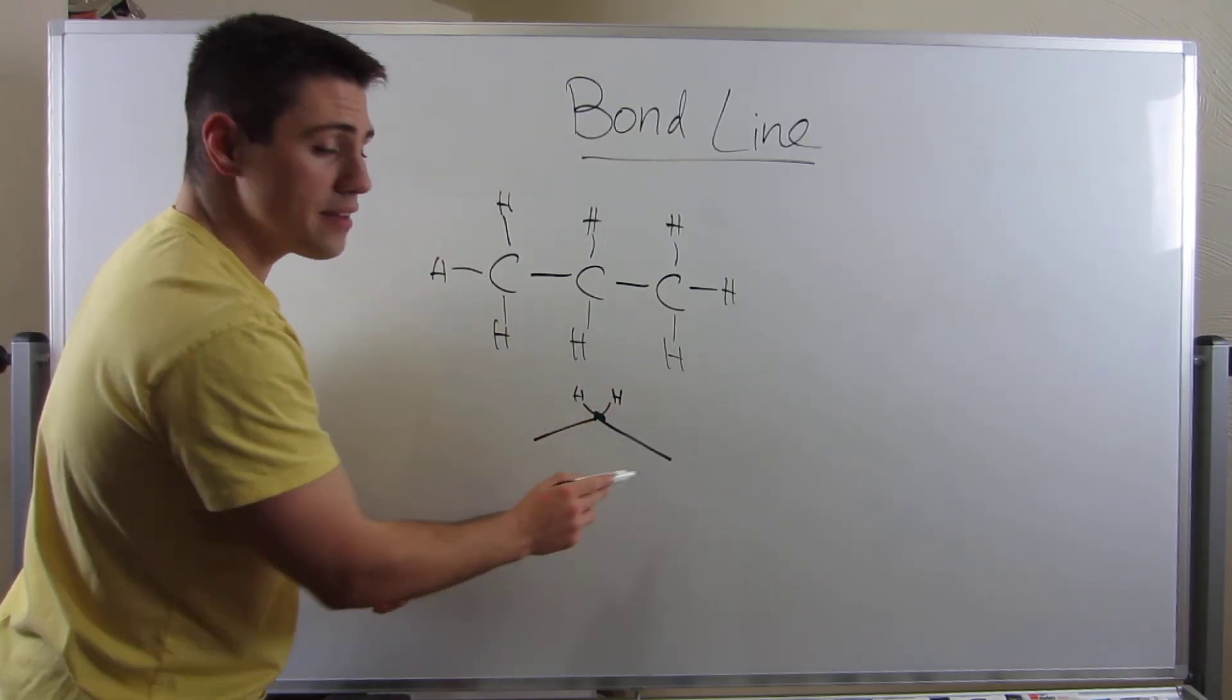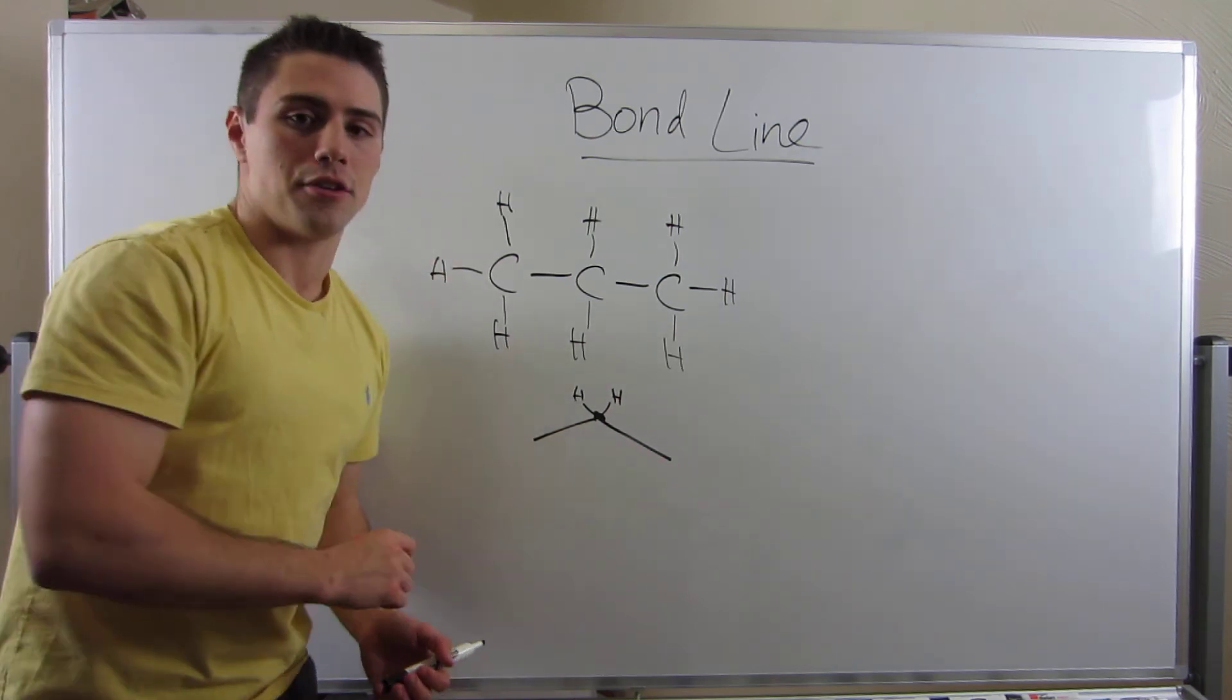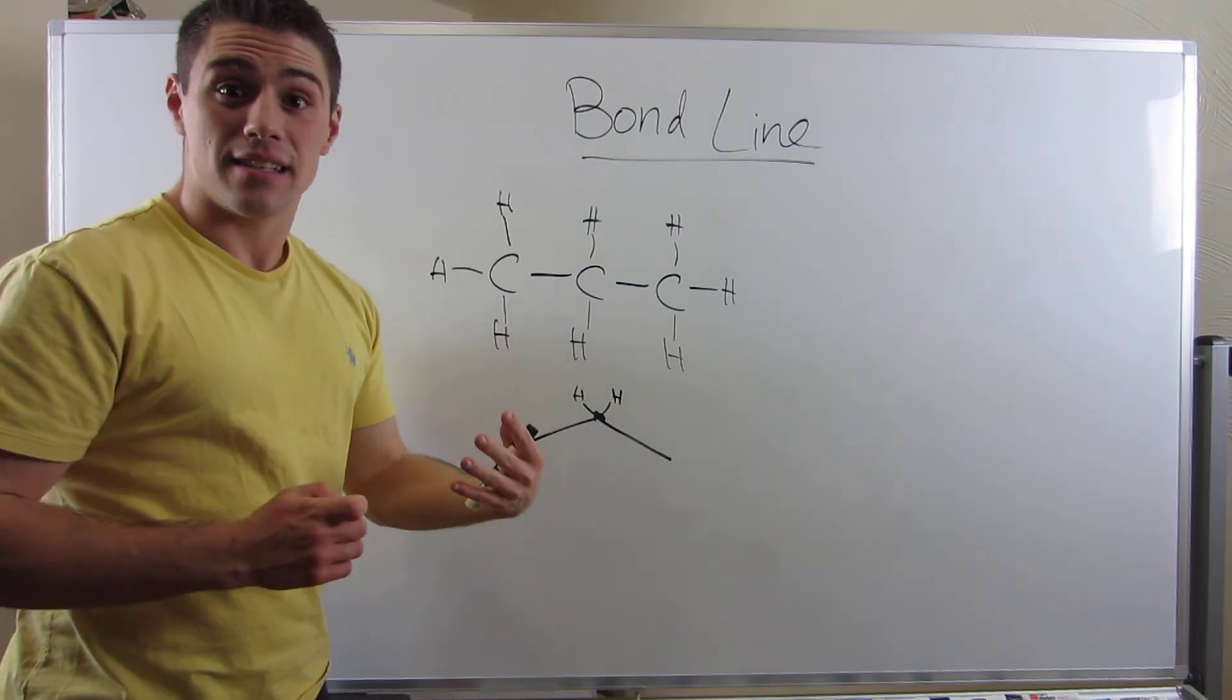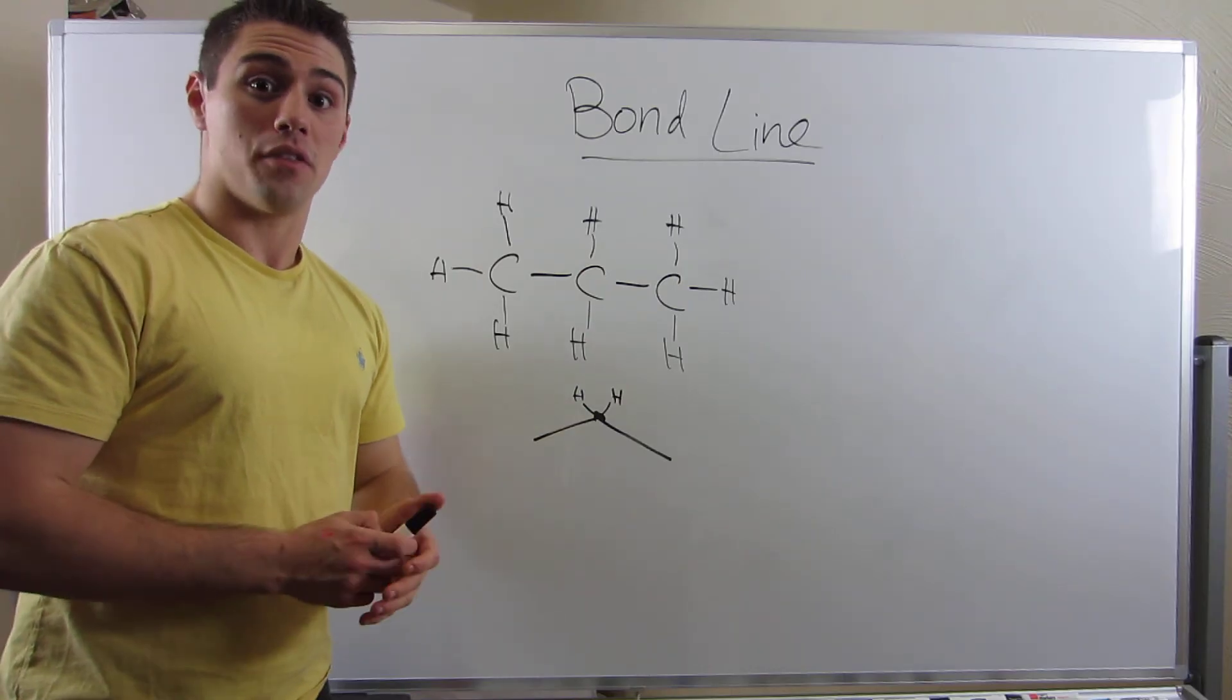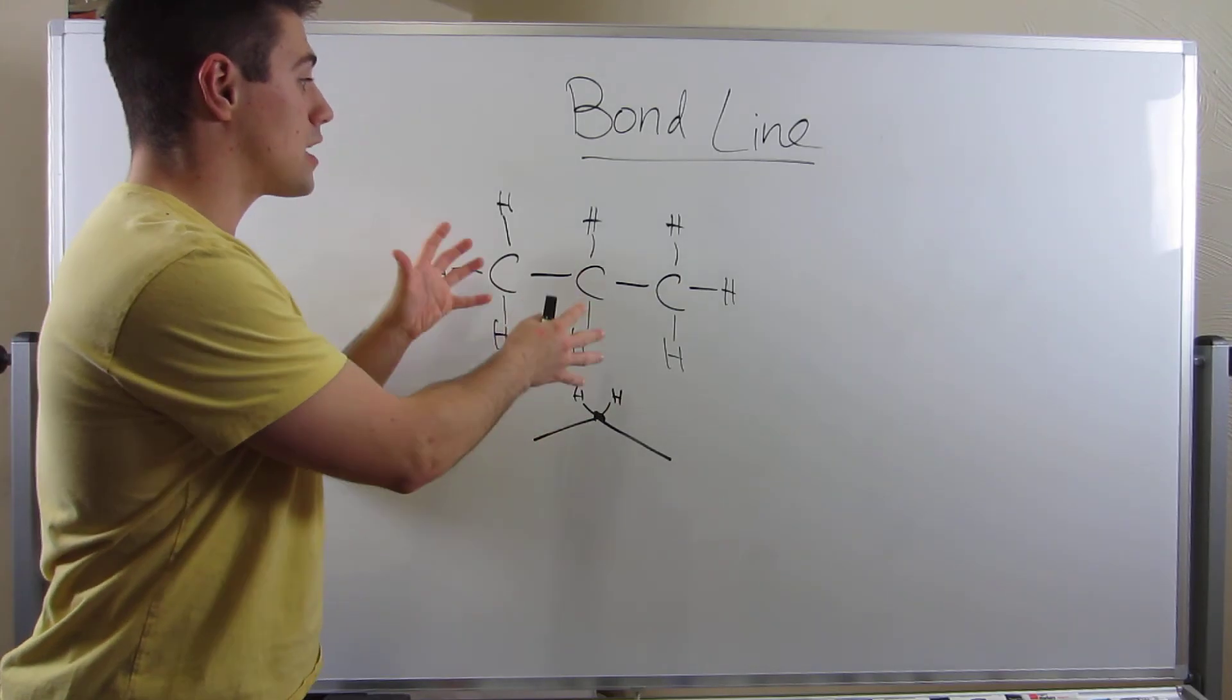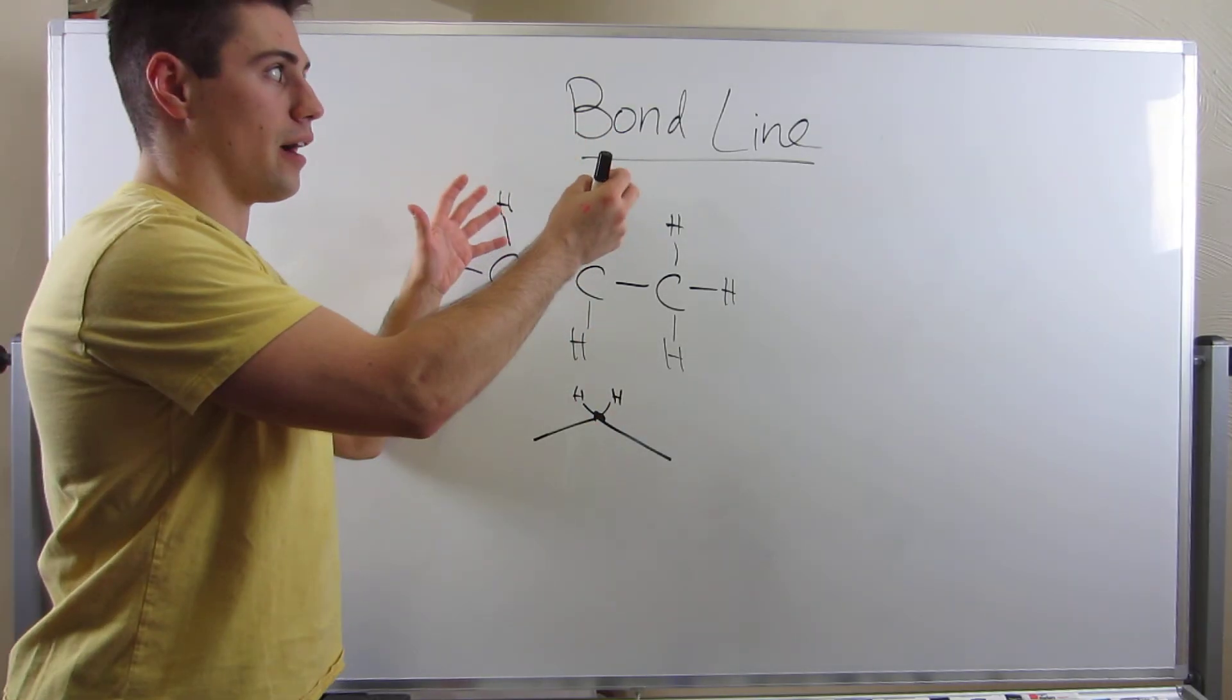And then the guys on the end, they only have one carbon-carbon bond. So they have three implied hydrogens on either side. This is the type of thing where it's best to just practice it instead of someone show you. And I have this on the first worksheet on the website, which includes Lewis dot structures and transferring bond line to Lewis dot structures or Lewis dot structures to bond line.